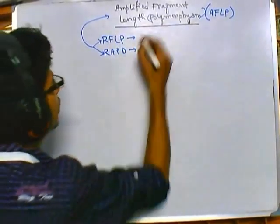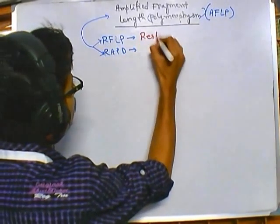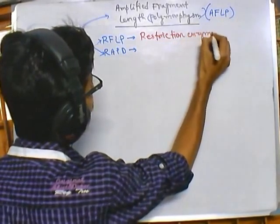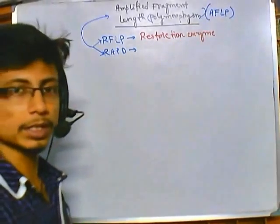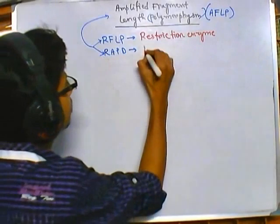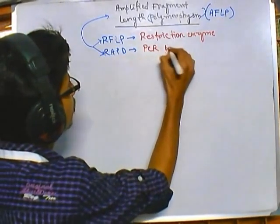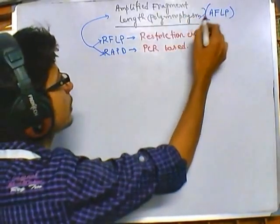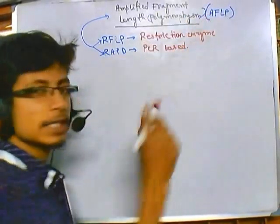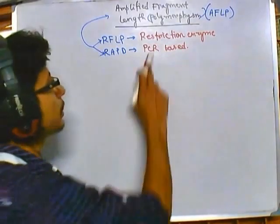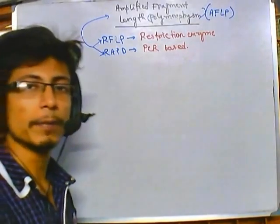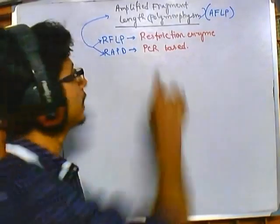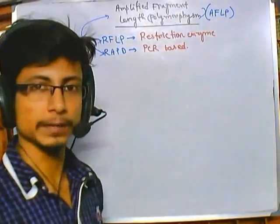In RFLP it is a restriction enzyme involvement process, and in RAPD it is a PCR-based process. So for AFLP we require both restriction enzyme treatment as well as PCR. By combining all these things together we get a better technique to handle and identify the presence of polymorphic DNA.